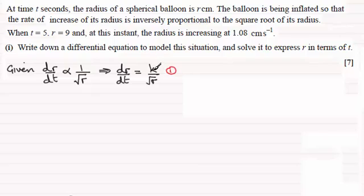And I need to work out what this constant is. And what I know is that from this information here, when r is 9, we're told that the radius is increasing, that's dr by dt equals 1.08 centimeters per second. So let's just put that down here, that when the radius r equals 9, we know that the rate of increase of the radius, that's dr by dt, is equal to 1.08.